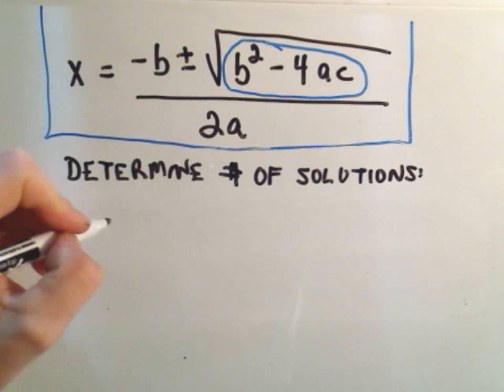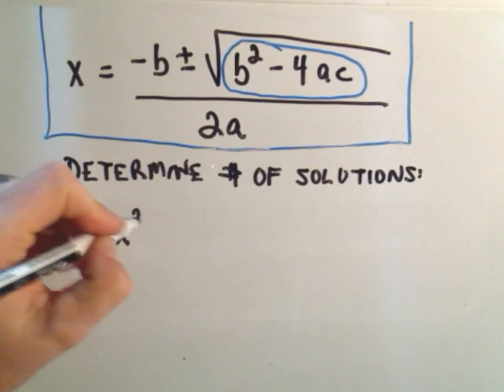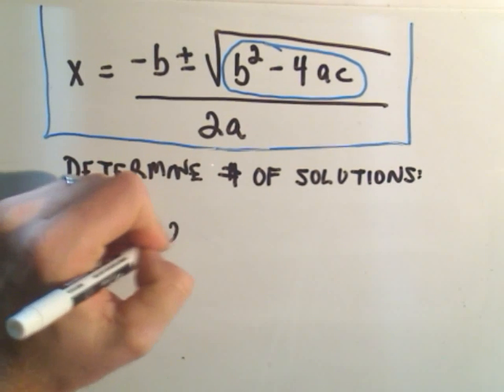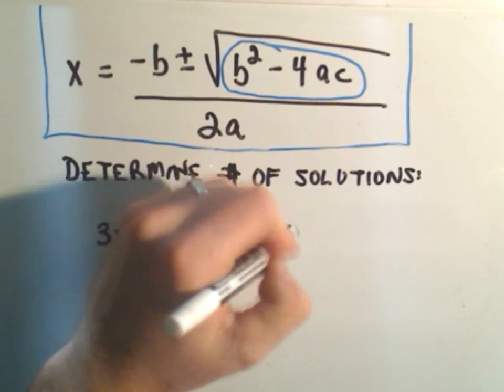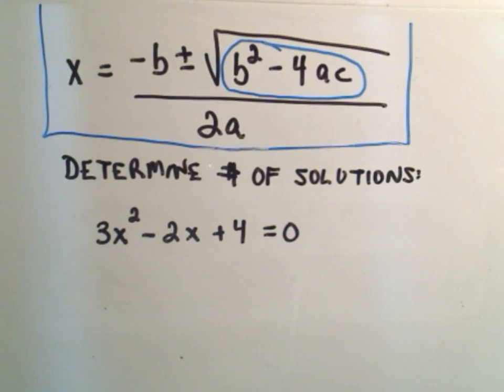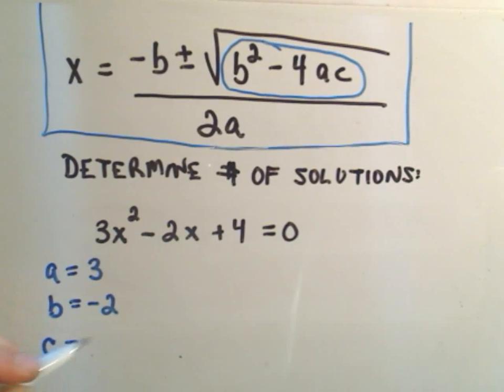So suppose I have the quadratic equation 3x squared minus 2x plus 4 equals 0. Well, whatever number's in front of x squared, that's your a term. Whatever number's in front of the x term, that'll be your b. And then whatever the number hanging out is, that'll be your c value.